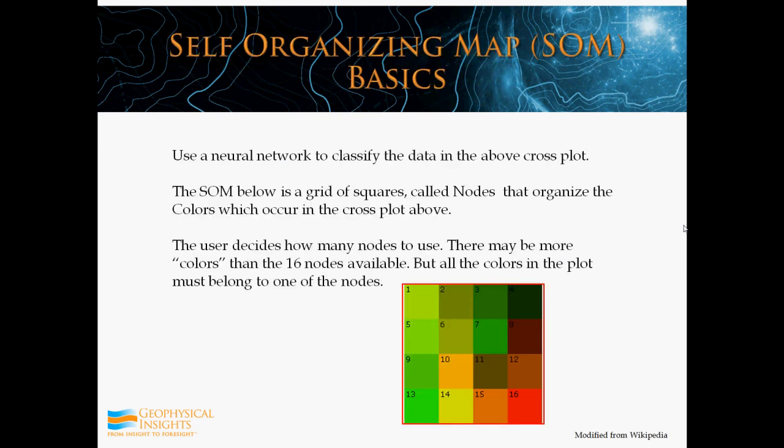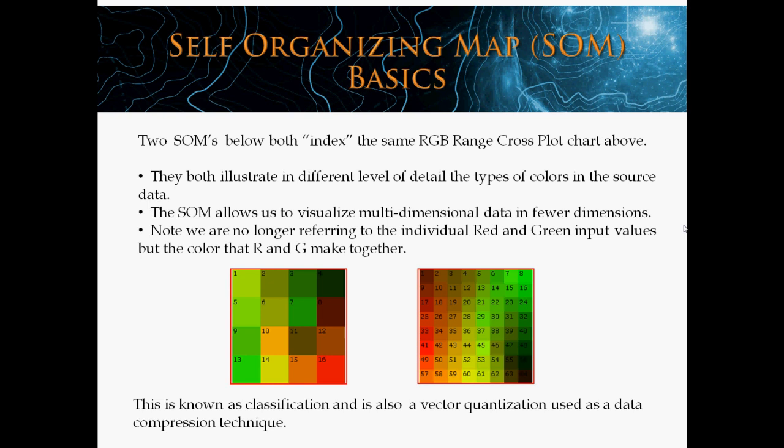I'm going to use the neural network to classify those data points from the cross-plot. What I'm showing is a grid with 16 squares — each square is called a node. The nodes will organize the colors in the cross-plot. The user decides how many nodes to use; I've chosen 16 for this demonstration. There may be many more colors than 16 nodes, but all those colors have to fit into only 16 nodes, so you take the ones that fit closest. You may want to choose more nodes — for instance, in this slide I'm showing another square that has 64. Both illustrate at different levels of detail the same colors that were in the cross-plot.